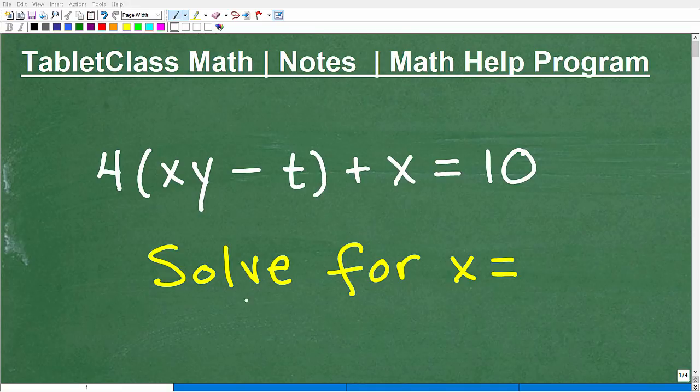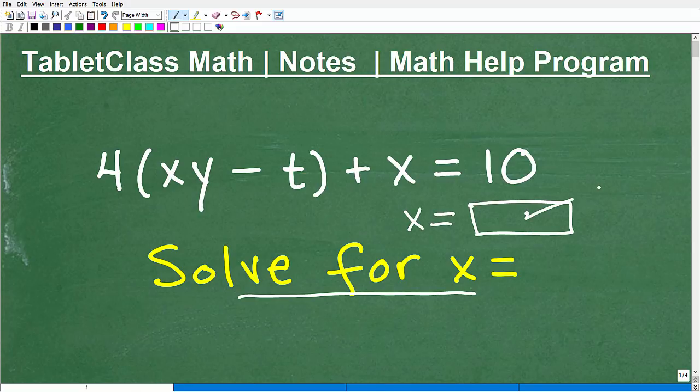Okay, let's talk about how to solve for x with this particular equation. This is practicing something called solving for a particular indicated variable. And you can see here in our equation we have three variables: x, y, and t. Then we have some numbers going on, so I want you to solve for x, or write this equation in terms of x. Effectively, I want you to shuffle things around so we have x equals all this other stuff over here.